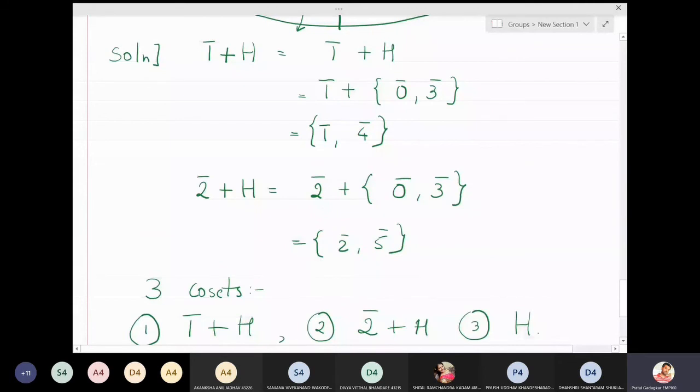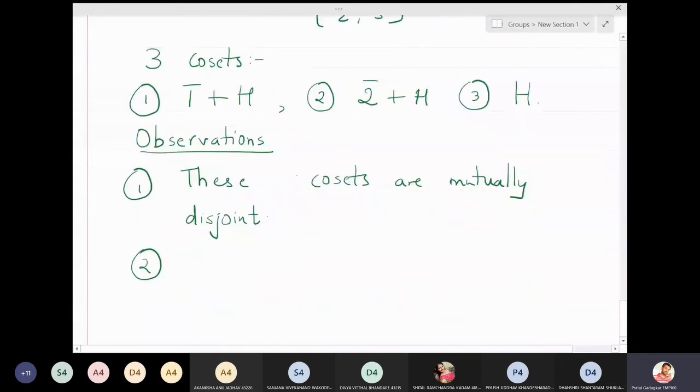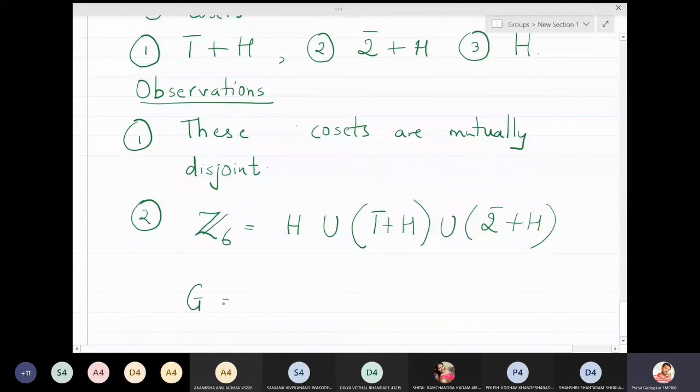The second observation is that Z₆ = H ∪ (1̄ + H) ∪ (2̄ + H). In my upcoming lectures we will try to prove that if you have a group G and if you have the cosets—suppose the cosets are H, the next coset is a * H, the next coset is b * H and so on, whatever be the number of cosets...